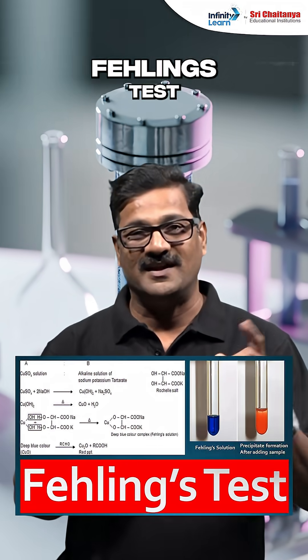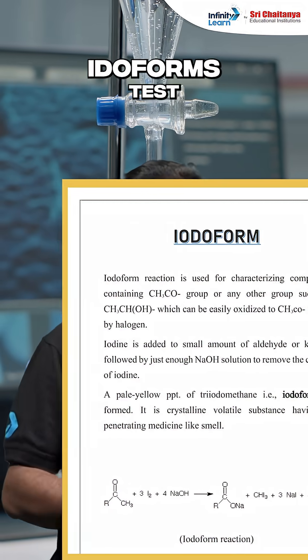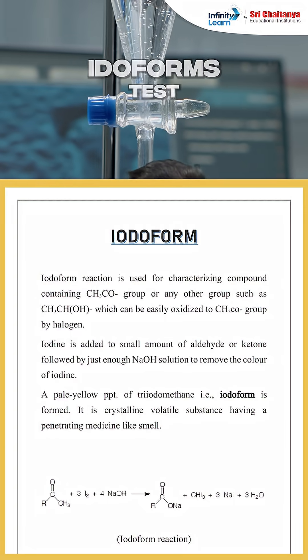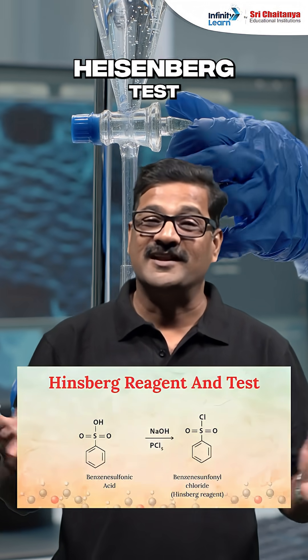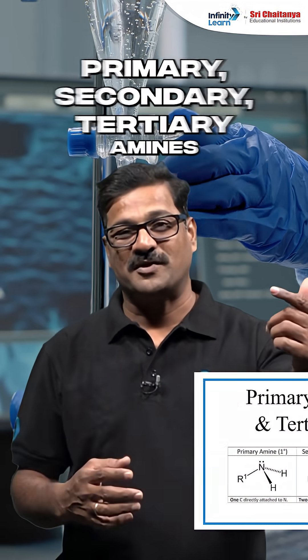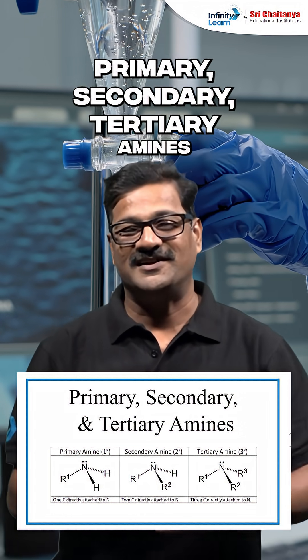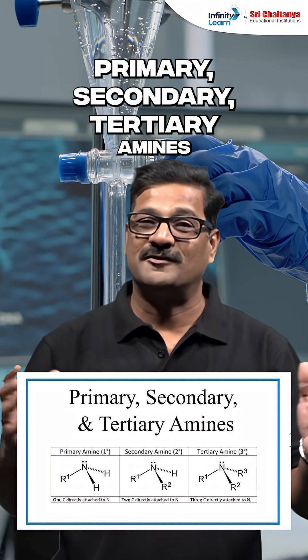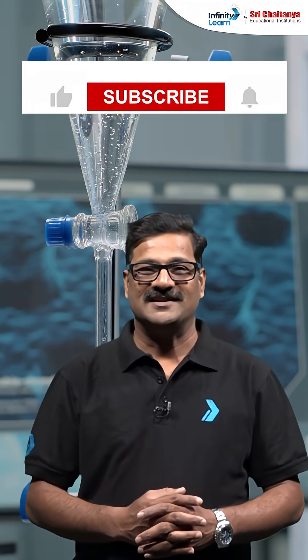Also, you can see the functional group tests like Tollens test, Fehling's test, Iodoform test, and for amines the Hinsberg test for primary, secondary, and tertiary amines. These are going to be the high-yield named reactions especially as far as organic chemistry is concerned.